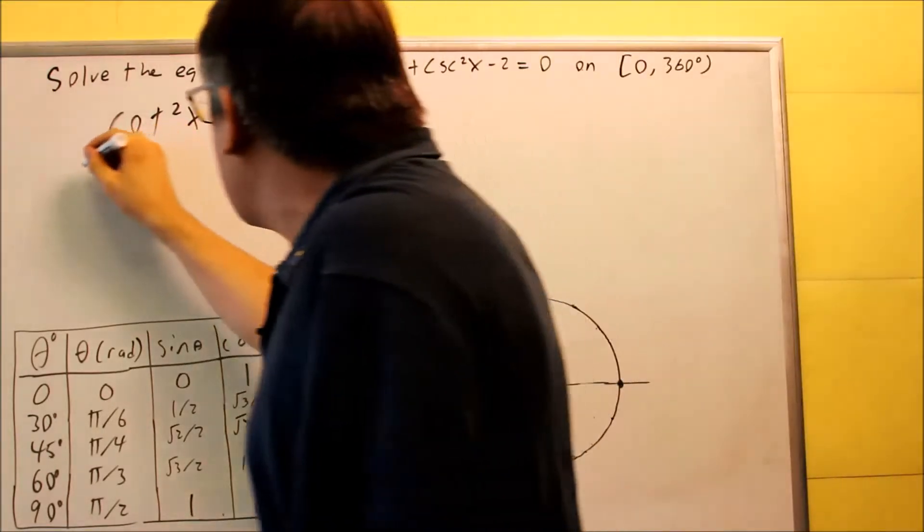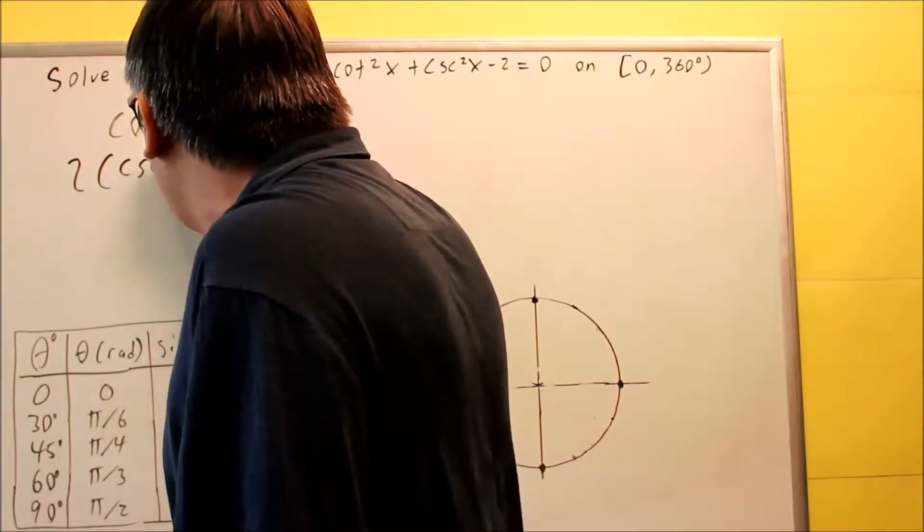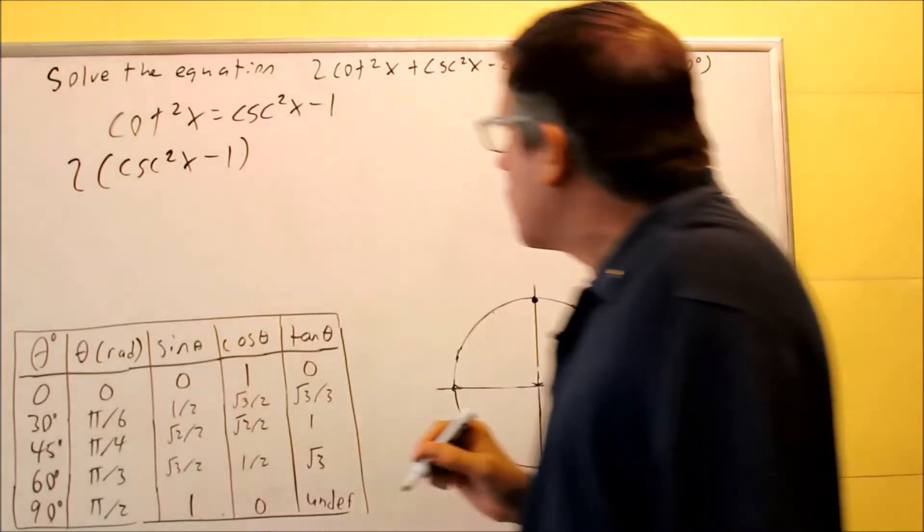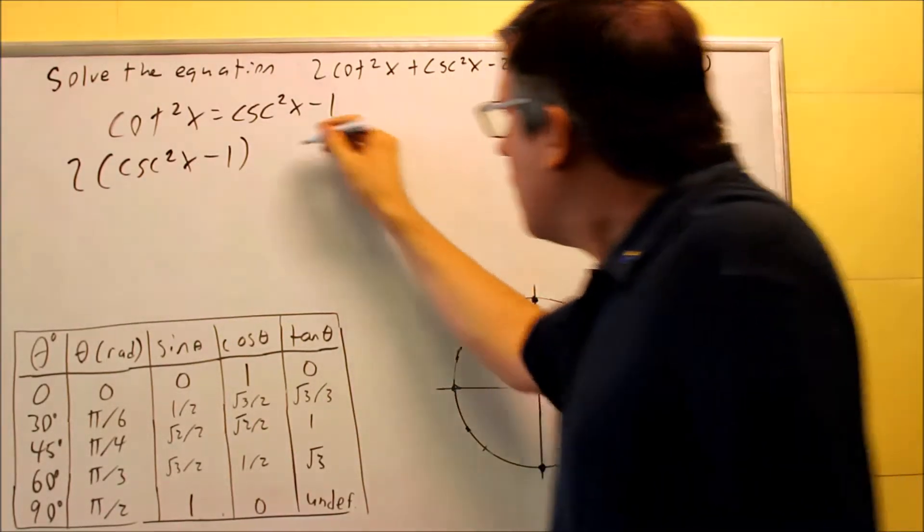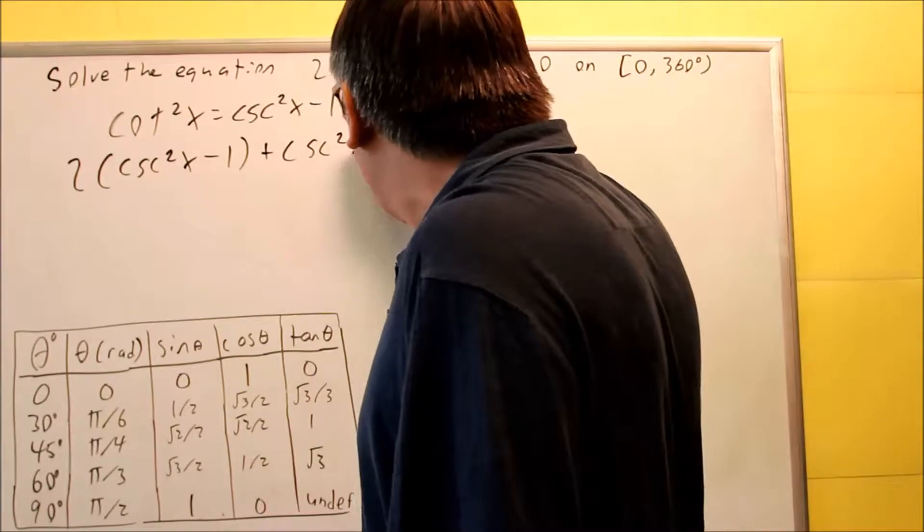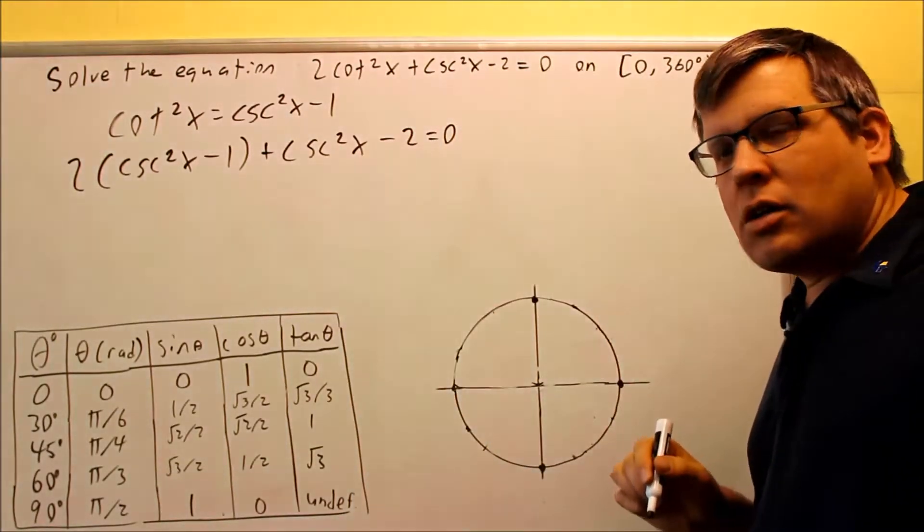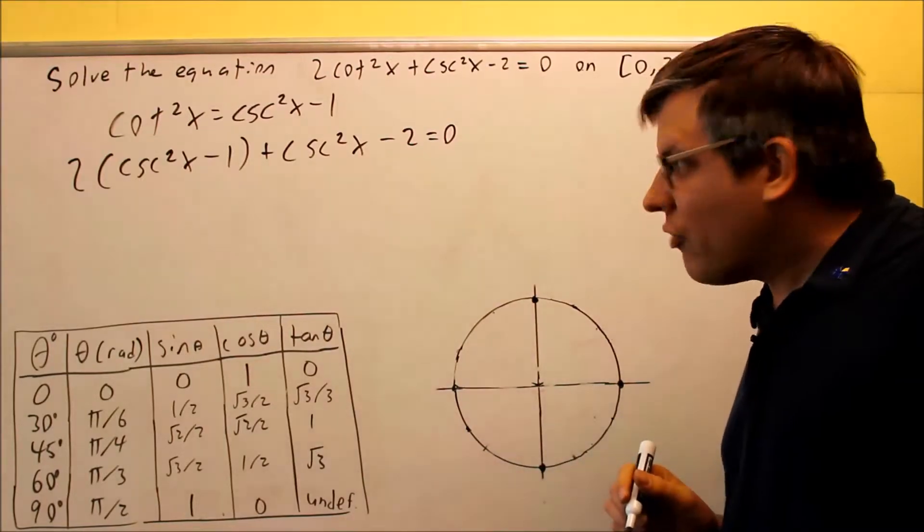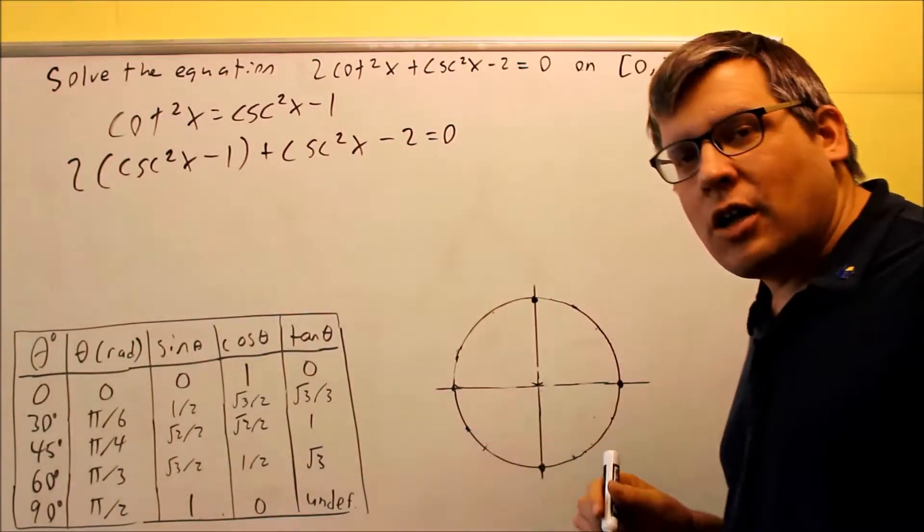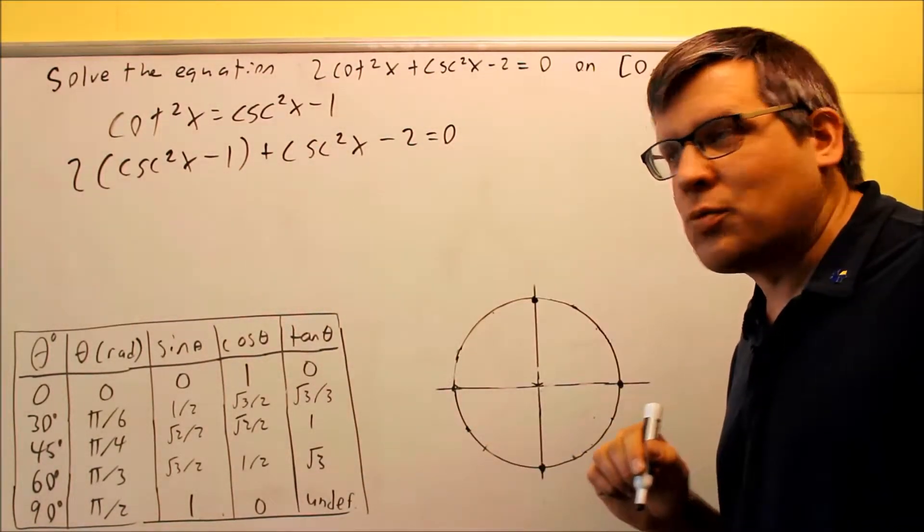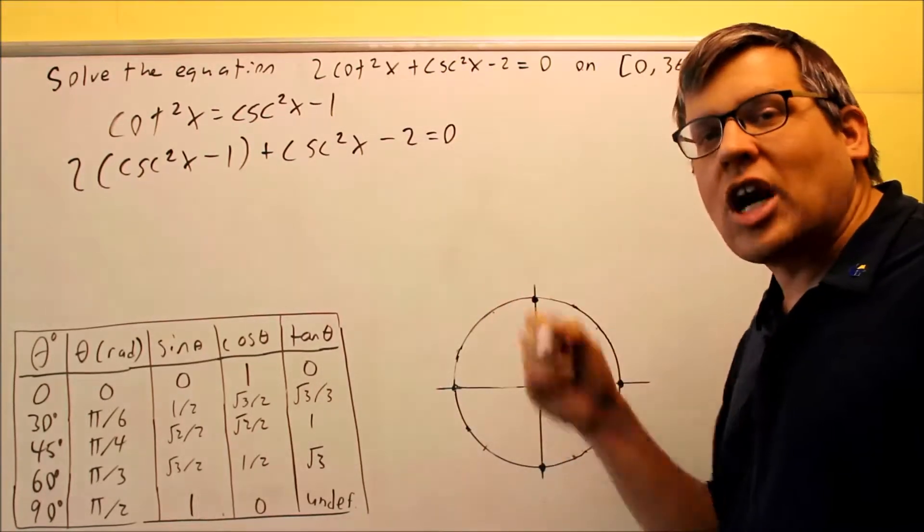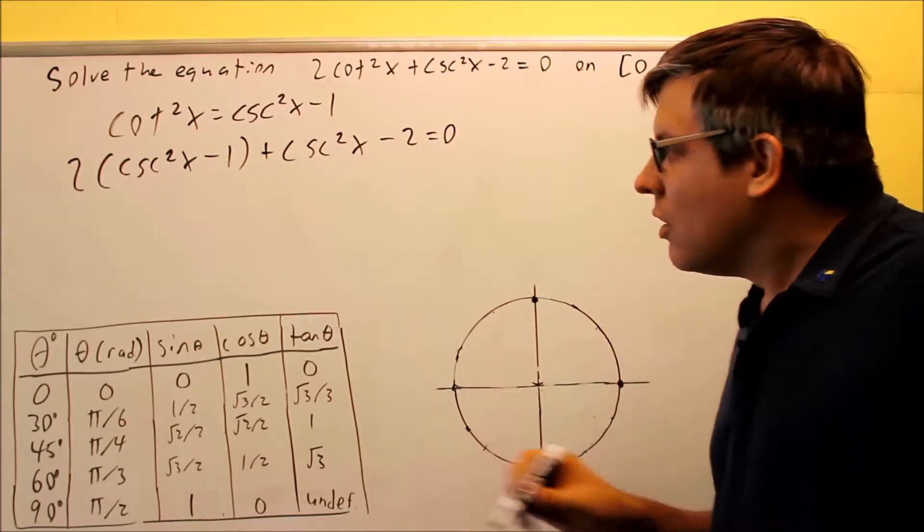Instead of cotangent squared I'm going to put in the identity cosecant squared x minus 1. Putting that in place of cotangent squared. Then the rest of it I have cosecant squared x minus 2 equals 0. The whole idea here is you're trying to get common factors or common terms that you can combine together.